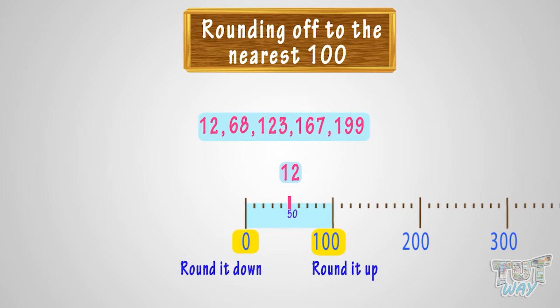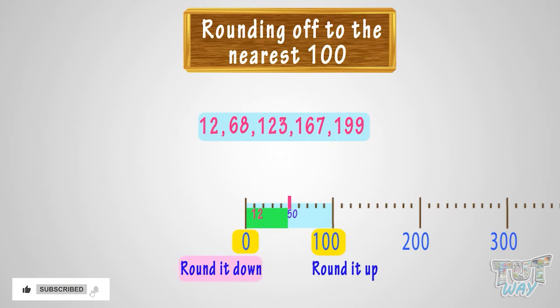If the number is above the 50 mark, you round it up. And if the number is below the 50 mark, you round it down. Here, 12 is below the 50 mark, so we will round it down to 0.